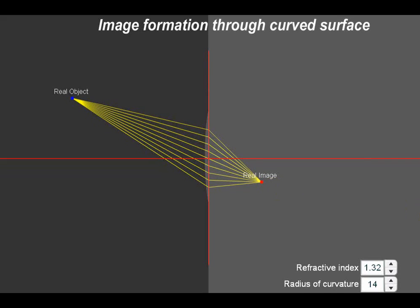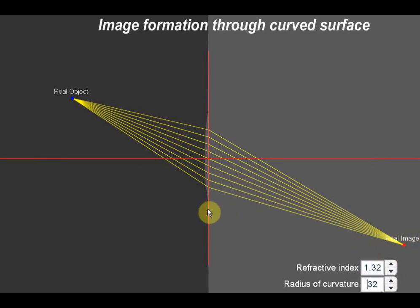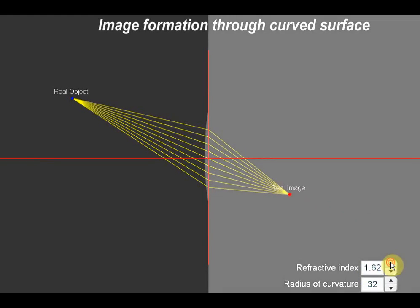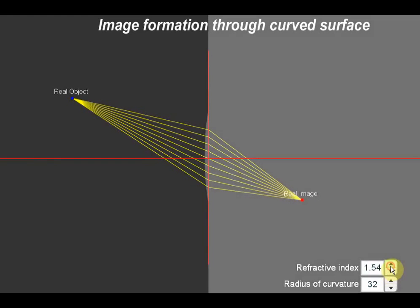If you want to see a more realistic view of the formula we just derived, here is a real object and a real image with a spherical surface. As we keep increasing the radius of curvature, the distance of the image from the pole keeps increasing — physically, the higher the radius of curvature, the longer distance the light rays have to travel before they converge. Similarly, as you increase the refractive index, the real image comes nearer to the curved surface, because the material's ability to converge the light rays increases. This animation shows how V varies with radius of curvature and refractive index.